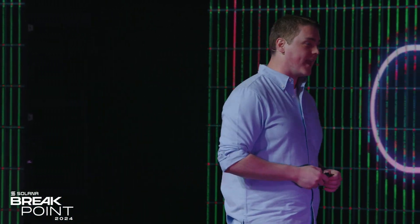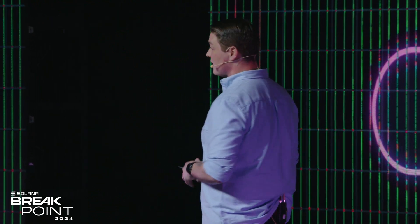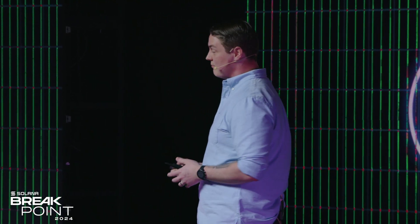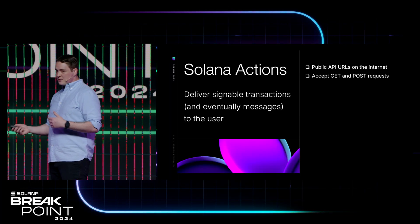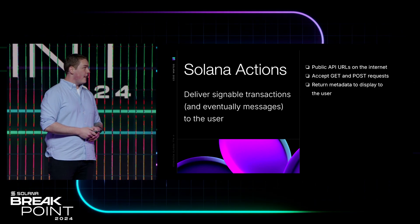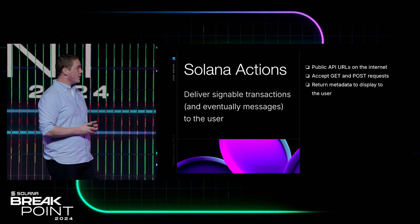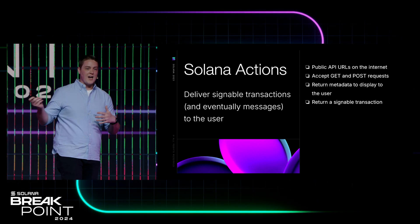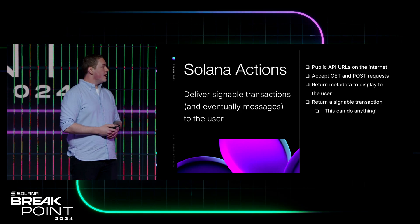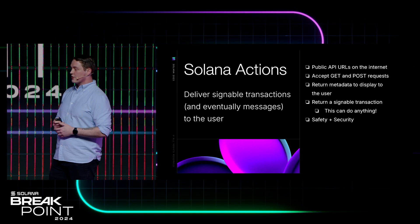So what are Actions? We've already talked about Blinks — Blinks are the front end, Actions are the back end. Actions are just delivering signable transactions, and eventually messages, to users. Eventually that will even be optional — you can just do anything. They're just public API endpoints on the internet, globally accessible. They accept GET and POST requests, just like a typical REST API. All they're doing is returning whatever metadata you need to display in that interface, and then you're also returning a signable transaction — eventually messages. You can even just paginate through metadata and show all sorts of cool things.